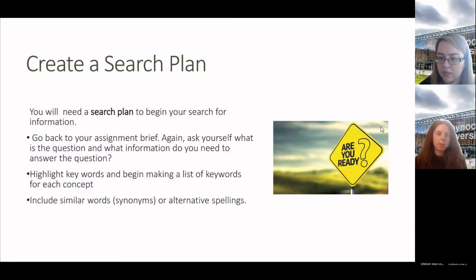It's a good idea to create a search plan. You will need a search plan to begin your search for information. Go back to your assignment brief. Ask yourself what is the question and what information do you need to answer the question. Highlight keywords and begin making a list of words for each concept and include similar words or alternative spellings. If you have whatever the exam question or the research question is, taking out those keywords, thinking of some synonyms, similar words and entering them into either Google Scholar or wherever you've decided to do your research. Just changing it around because it'll bring you up lots of different types of papers and things like that. You'll get the best information if you just really search well and do a thorough investigation.